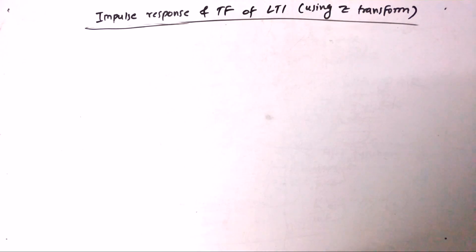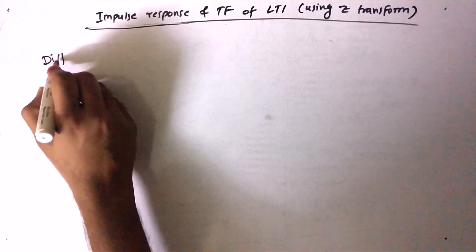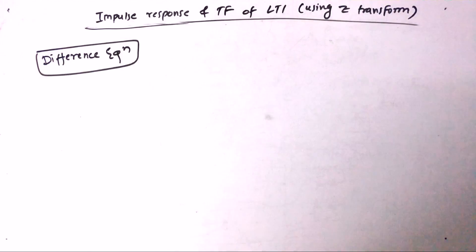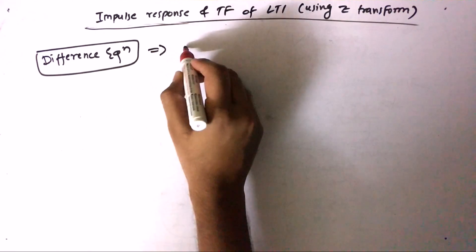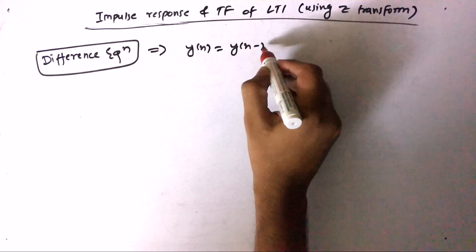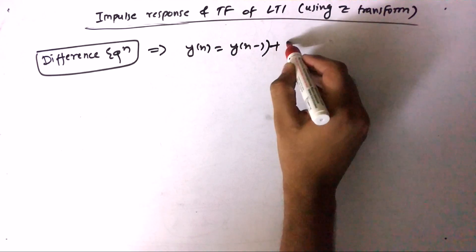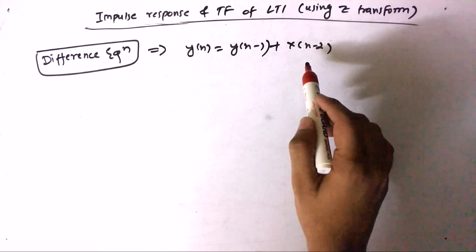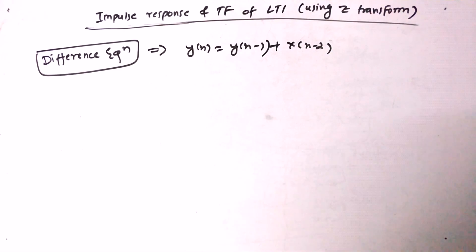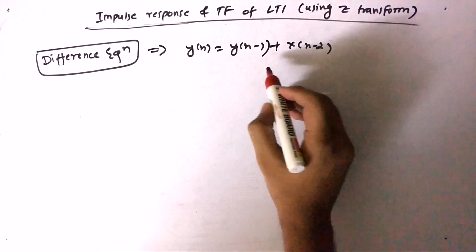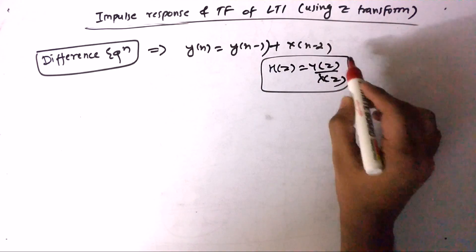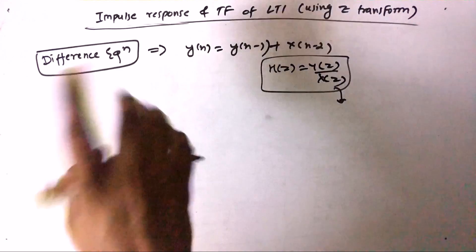Now let's talk about the difference equation. How it looks: it is something like Y(N) = Y(N−1) + X(N−2) — it can be any values. Our task is to convert this into H(Z), and we know that H(Z) is nothing but Y(Z) by X(Z). So we need to find the Z-transform of this difference equation.